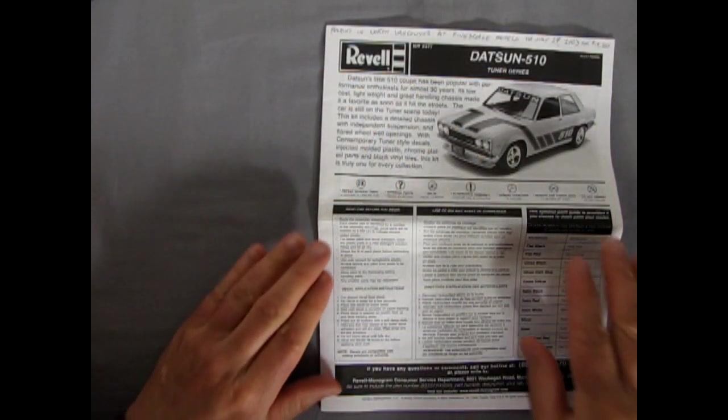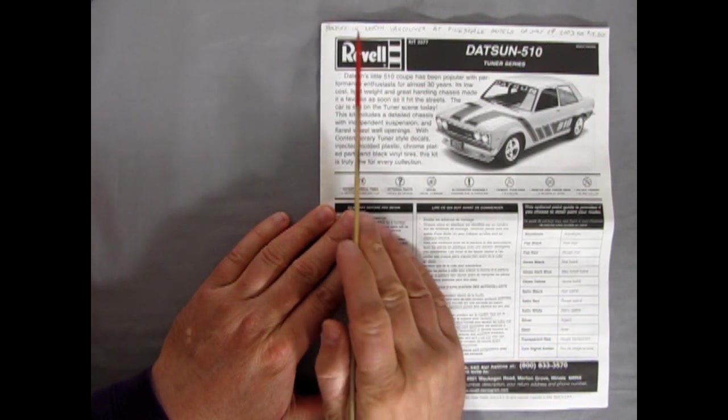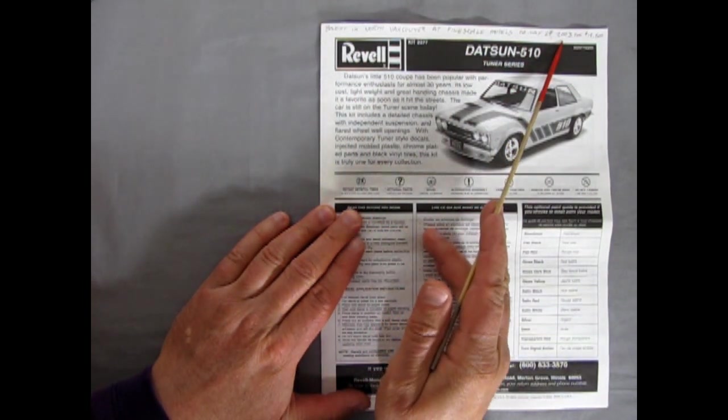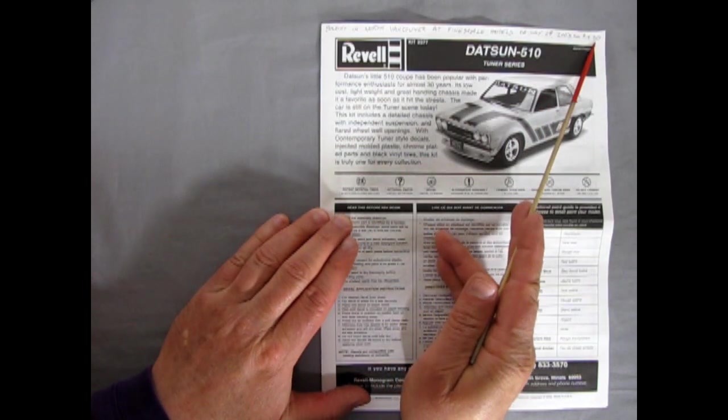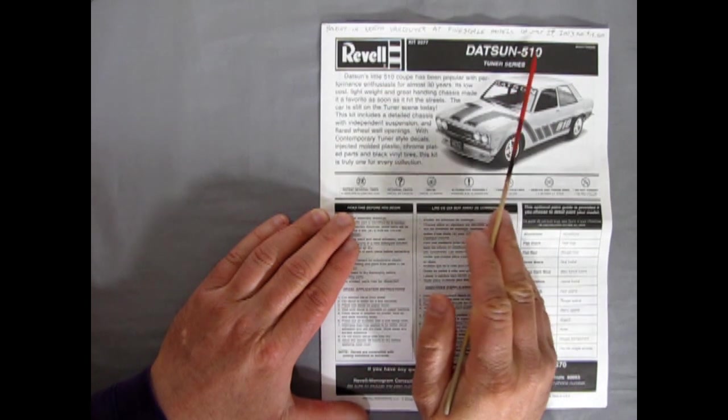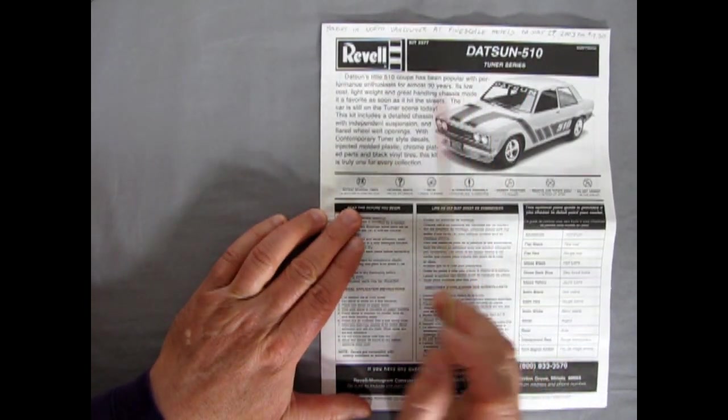A lot of neat stuff. Okay so I'm going to clear this box out of the way and we will come back and take a look at all these amazing parts including our instruction sheet. And here we have our instruction sheet with a bit of history on the Datsun 510. But I bought this in North Vancouver at FineSkill Models on July 29th 2003 for $19.50 which was pretty high price back then. Most models were still going around $10 to $15 Canadian.